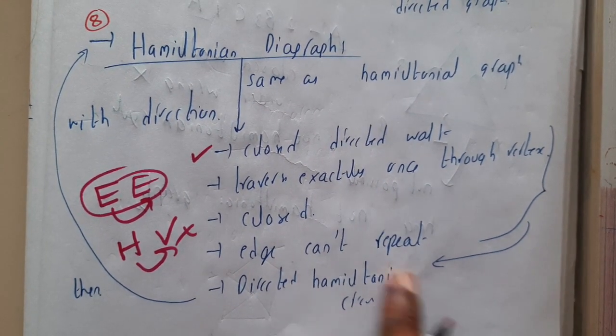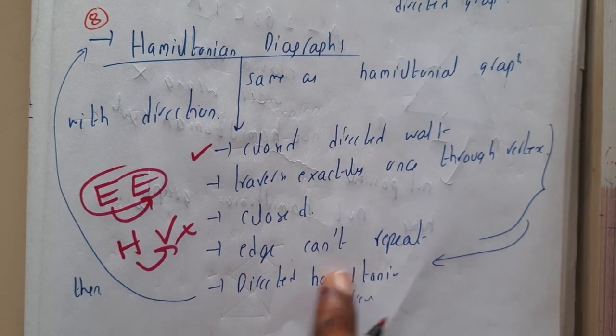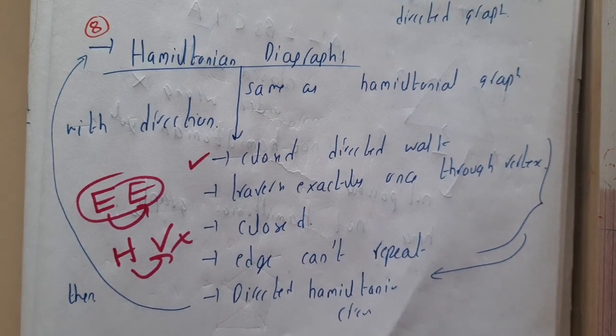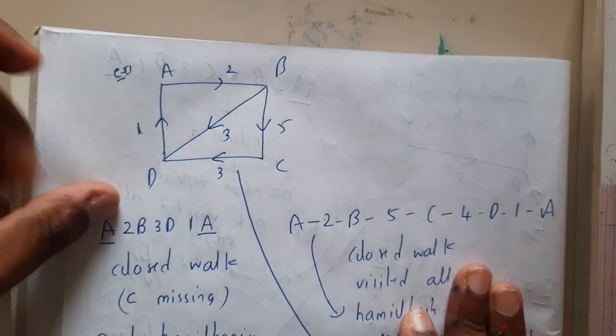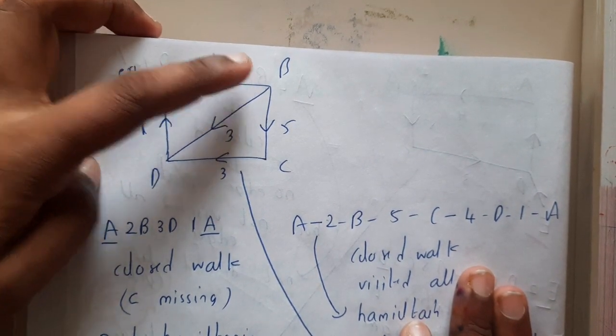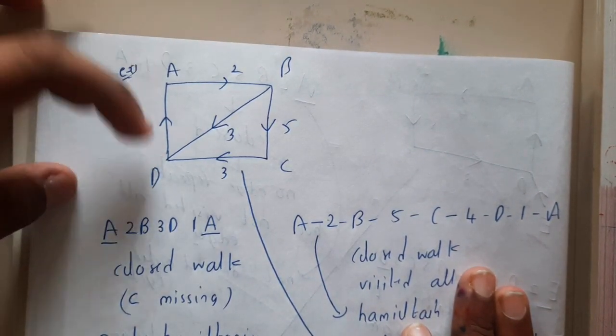You will be finding a directed Hamiltonian circuit. If there is a Hamiltonian circuit, you can directly say it is a Hamiltonian directed graph. Let's take a small example: A to B, B to D, D to A.